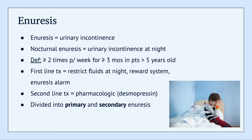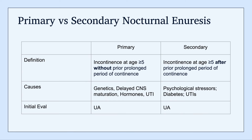You can further divide enuresis into primary and secondary enuresis. The distinction basically boils down to recognizing if there was a period of continence prior to the incontinence starting. For primary enuresis, the incontinence begins without a prior prolonged period of continence. Secondary enuresis is incontinence that occurred after there was a prolonged period of continence — the child had a period of continence and then developed incontinence.